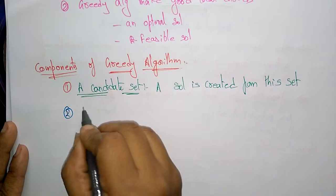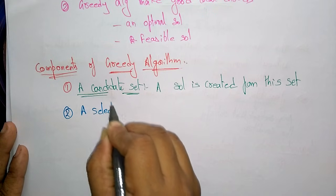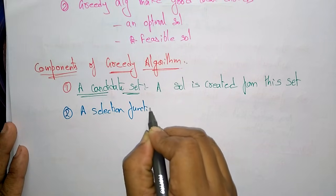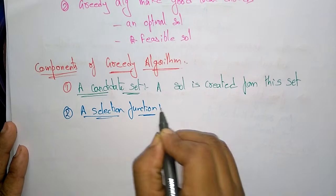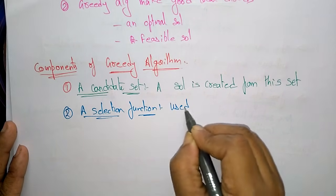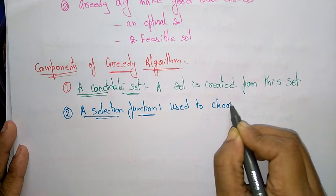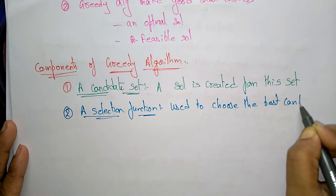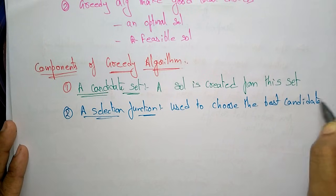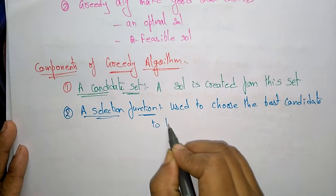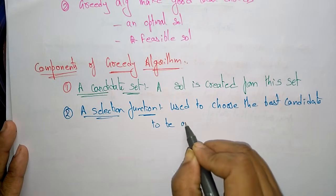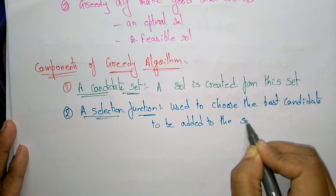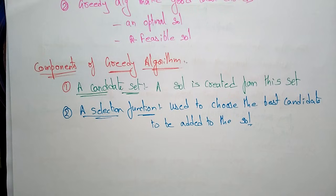The second component is the Selection Function. The selection function is used to choose the best candidate to be added to the solution — it selects the best subset from the candidate set.